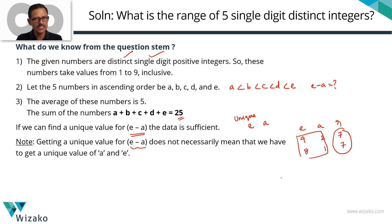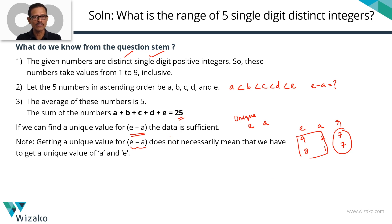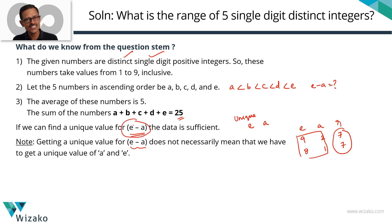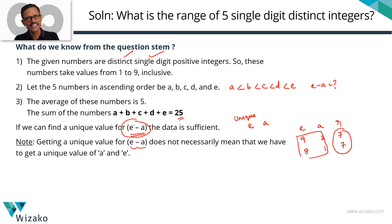We'll wait and see whether it works this way in this question. What is important is to write the sufficiency condition appropriately: we don't need a unique e and a unique a — what we need is a unique e minus a. With this, let's get started with statement 1.